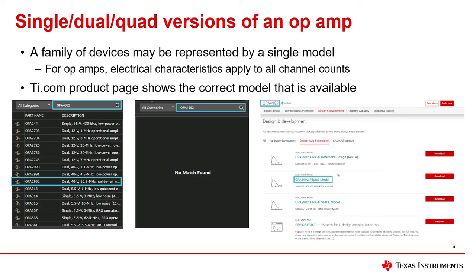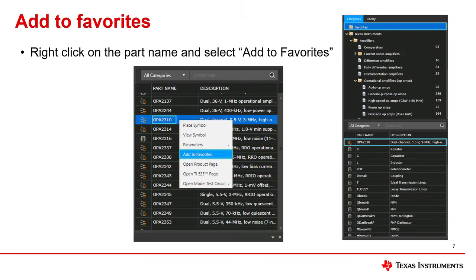This can be confirmed by the OPA4992 ti.com product page, which shows the correct available model. If one device is used often, it may be useful to add it to the Favorites folder. This can be done by right-clicking on the part name and selecting Add to Favorites.